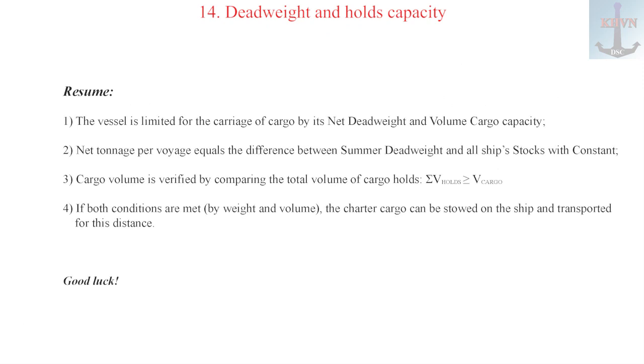Summary. 1. The vessel is limited for the carriage of cargo by its net dead weight and volume cargo capacity. 2. Net tonnage per voyage equals the difference between summer dead weight and all ship stocks with constant. 3. Volume cargo capacity is verified by comparing the total volume of cargo holds with the volume of cargo.